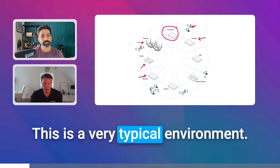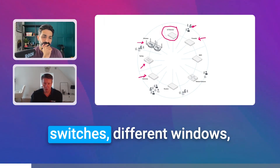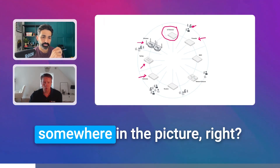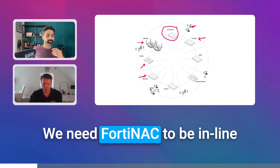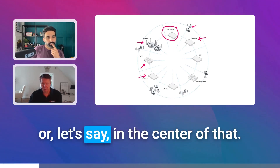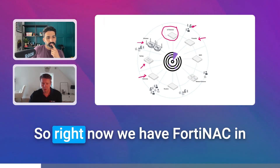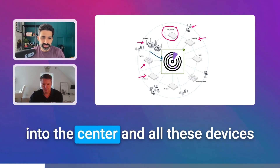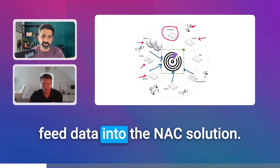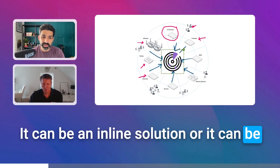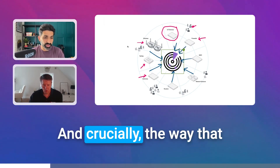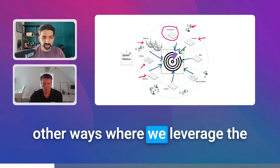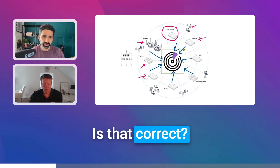I agree — this is a very typical environment. You have IoT devices, syslogs, switches, firewalls, users, et cetera. We want to do some basic SNMP communication, and we want to put FortiNAC somewhere in the picture — in the center of that. So right now we have FortiNAC in the center of your infrastructure. NAC goes into the center and all these devices feed data into the NAC solution. It can be an inline solution or out-of-band, and the way that information is fed can be SNMP, RADIUS, or many other ways where we leverage the data of the network around us.